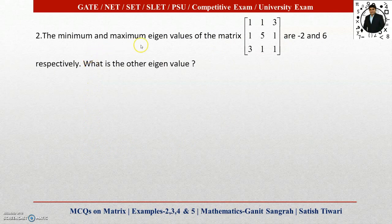Example 2: The minimum and maximum eigenvalues of the matrix are -2 and 6 respectively. What is the other eigenvalue? The options are 5, 3, 1, and -1.